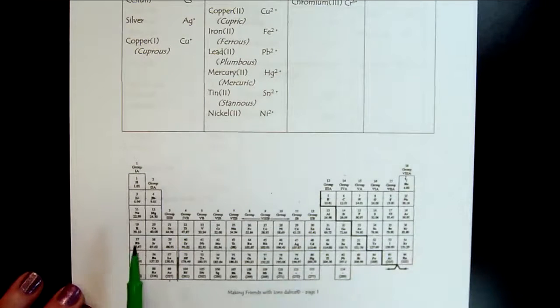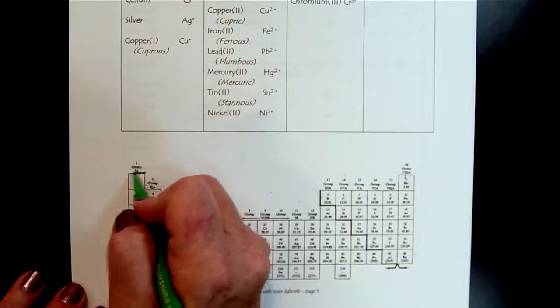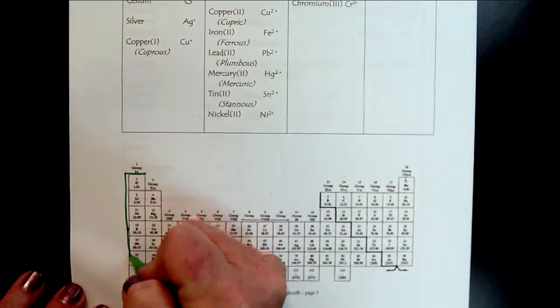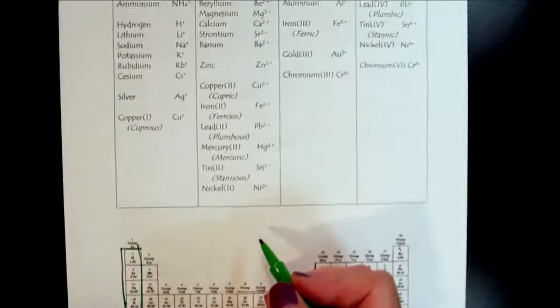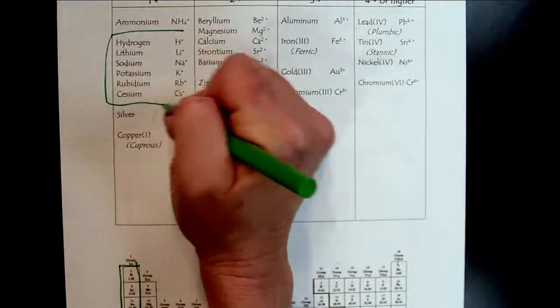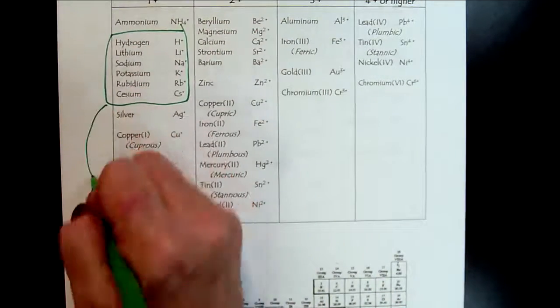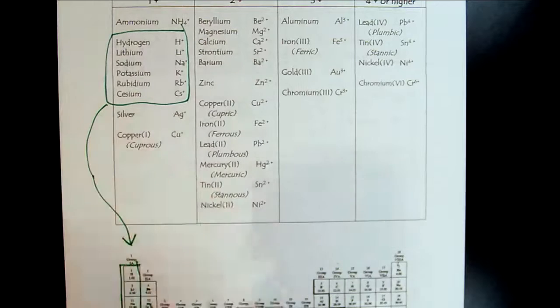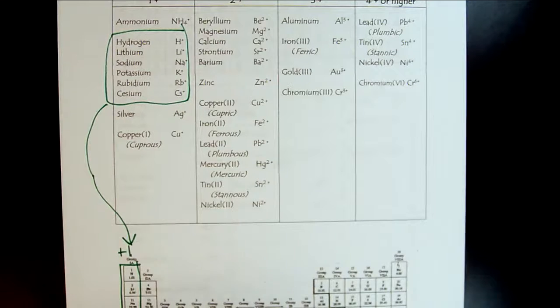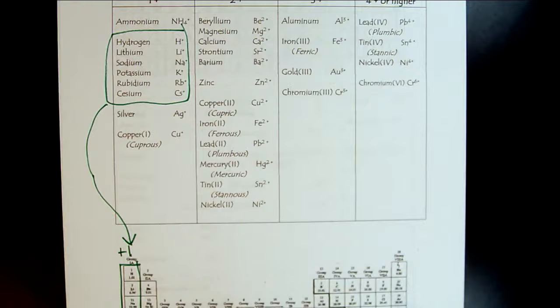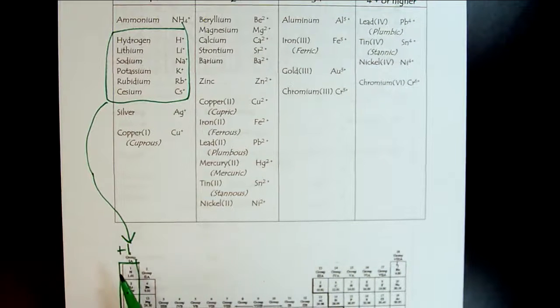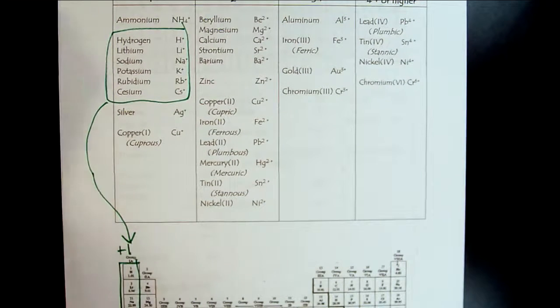So when we look at our ion list and we look right here, what do we notice? We'll just slide up and down. So here all of these plus one ions are all in group one. And you're always going to have access to a periodic table. So if you see these elements and you're asked about their ionic form, because they're in the first column, we know they're going to be plus one.